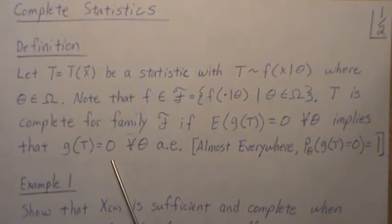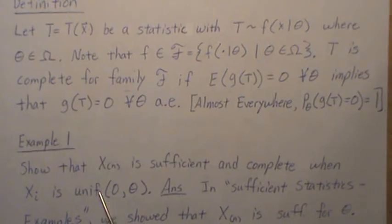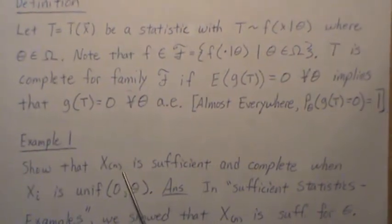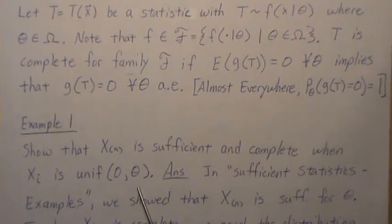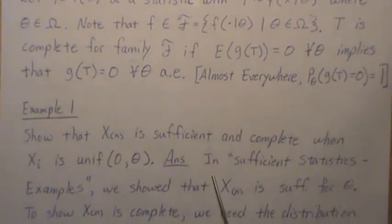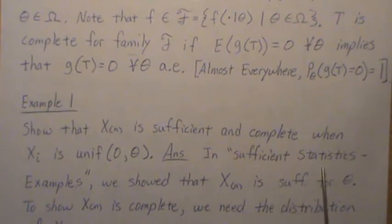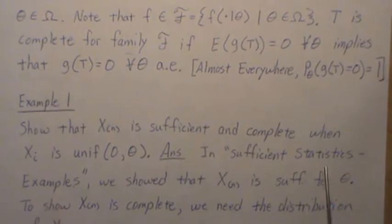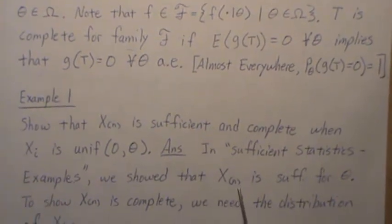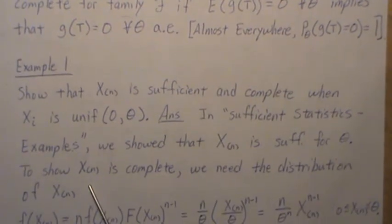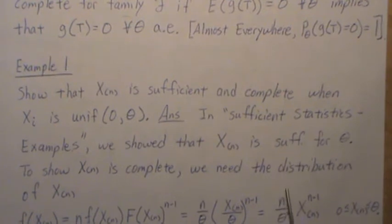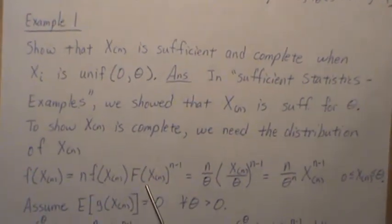Example one: show that X_(n), the nth order statistic, is sufficient and complete when X_i is from a uniform(0, theta) distribution. The sufficiency part is in 'sufficient statistics examples' — a video I have titled that — where we showed that X_(n), the nth order statistic, is sufficient for theta. Now to show that X_(n) is complete, we need the distribution of X_(n), which deals with order statistics.